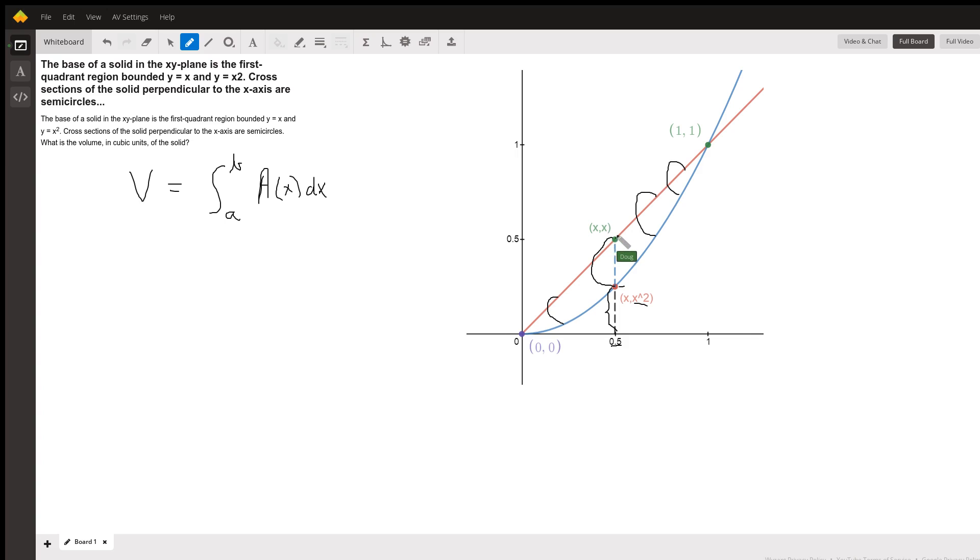The y coordinate of this point is going to be x. So this distance right here is really the diameter of our semicircle. x minus x squared, top minus bottom.